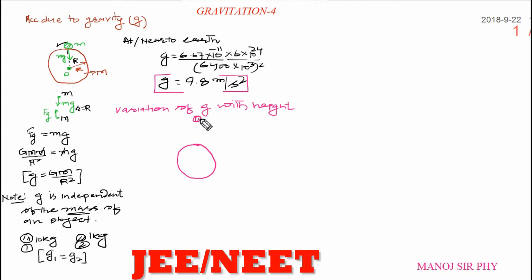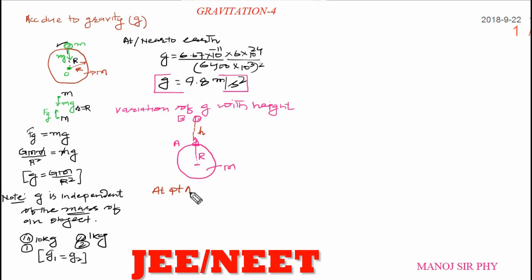This is the surface of Earth. An object initially at point A on the surface is moved up to point B at height h. The mass of the Earth is capital M, and the radius from the center is R. At point A, at the surface, acceleration due to gravity is g = GM / R².